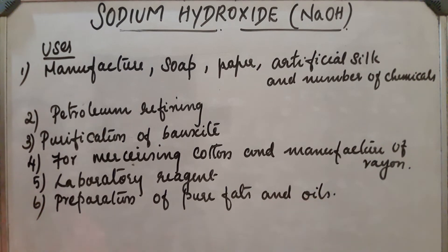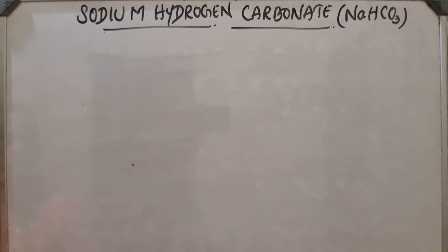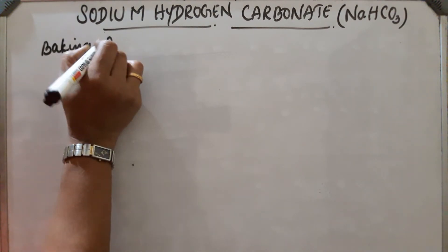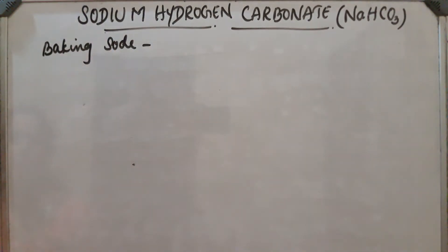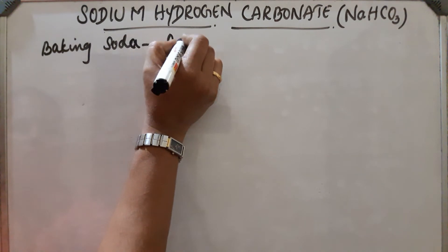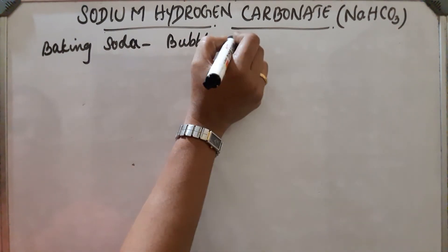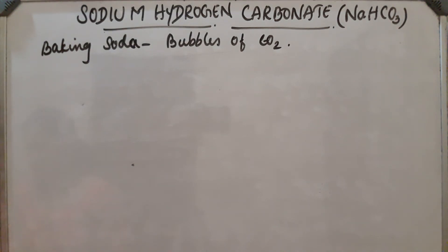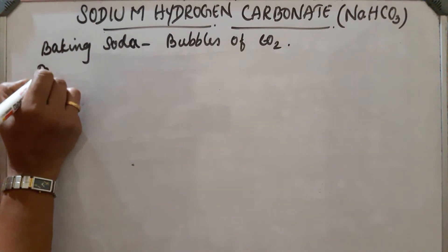Sodium hydrogen carbonate or NaHCO₃ is also called baking soda, because on heating it decomposes and generates bubbles of carbon dioxide. It is prepared by saturating a solution of sodium carbonate with carbon dioxide gas.